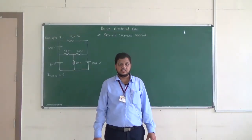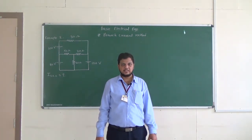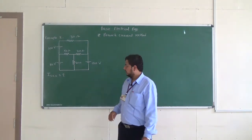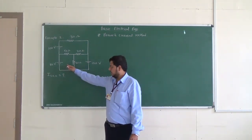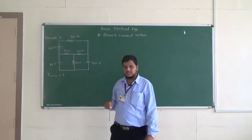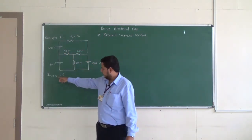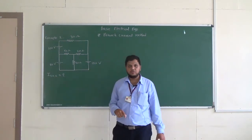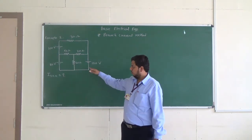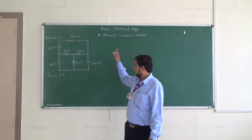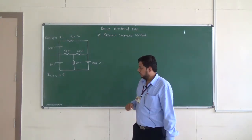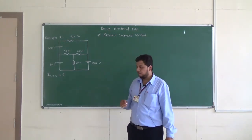Hello everybody. In this session we will solve the second example on the branch current method. Here again 3 voltage sources are there: one is 80 volt, 150 volt, and 100 volt. Different resistances are connected and we have to determine the current flowing through the 50 ohm resistance. As we have seen in the previous example, while solving such problems using branch current method, we are following 6 steps, and the same procedure we have to follow.